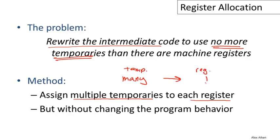Clearly there's a bit of an issue here. If we really are using many temporaries, we will not be able to fit them all into a single register. So there needs to be some kind of trick. There'll be situations when this will fail and we'll have to have some kind of backup plan. But our default plan is to try to put as many temporaries as possible into the same machine register, doing all this without changing the behavior of the program.